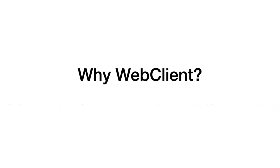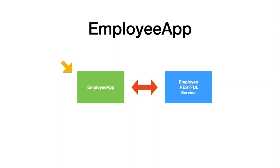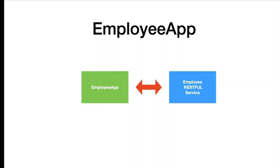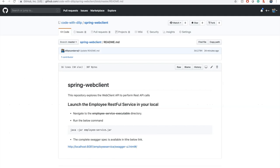Let me give you a quick overview of what we are going to build as part of this lecture. We are going to build an app called employee app which will behave as a REST client for the employee RESTful service. The web client code will be present in this application. The first step is we are going to download the necessary content for this lecture from GitHub. The link for the actual GitHub repository is available in the description below.